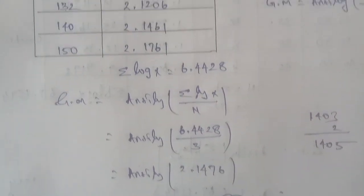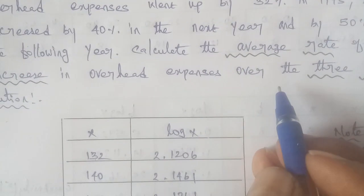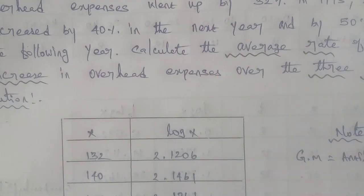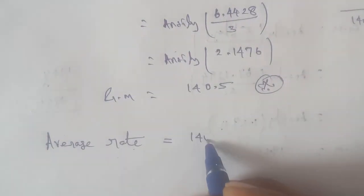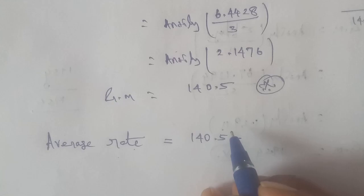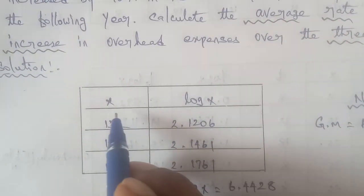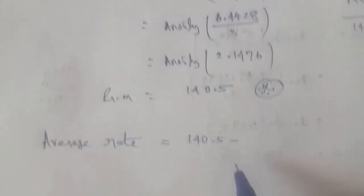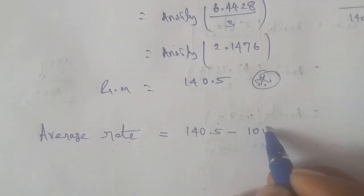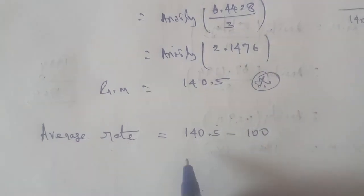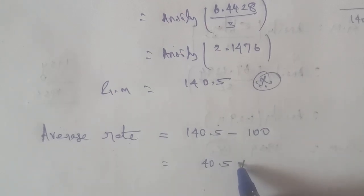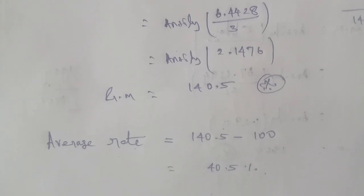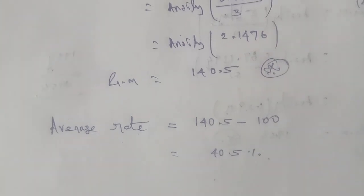The average rate of increase equals 140.5 minus the initial value of 100, which gives us 40.5. So the percentage is 40.5% - that's the average rate of increase over the three years.